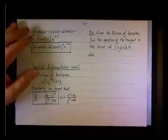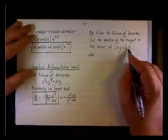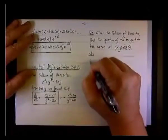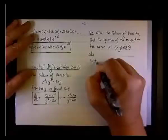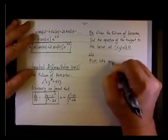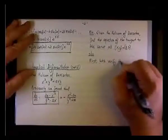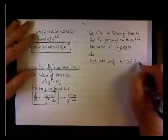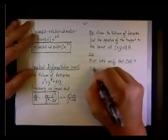All right, so what do we do here? I would like to verify that 3, 3 is a point on the curve. So first, let's verify that 3, 3 is a point on the curve.